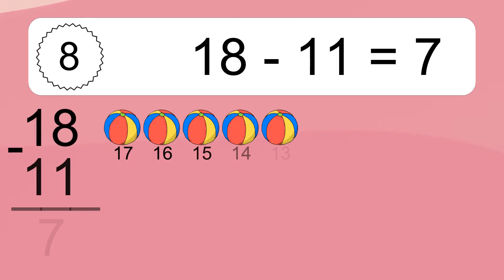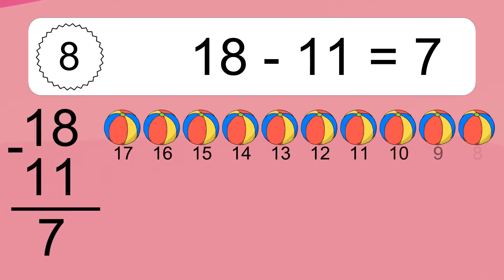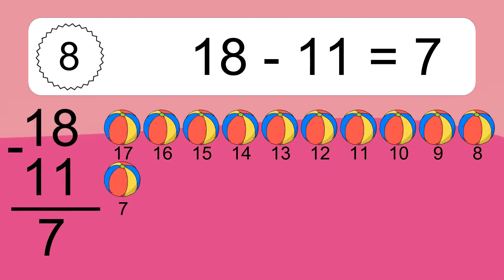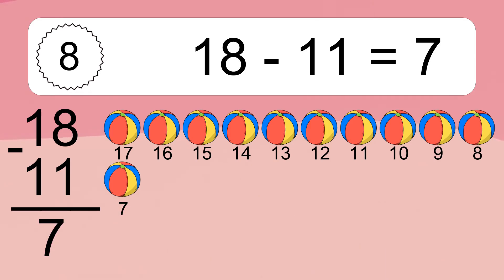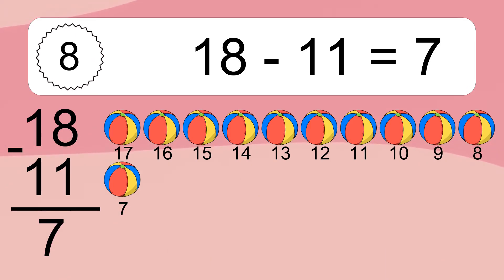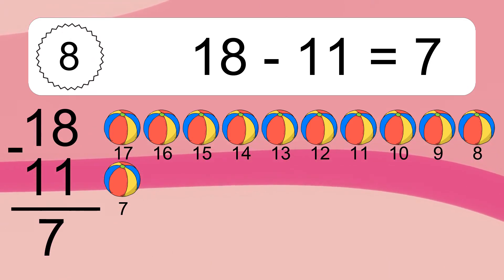18 minus 11 equals what? 18 minus 11 equals 7. Let's count it: 17, 16, 15, 14, 13, 12, 11, 10, 9, 8, 7.